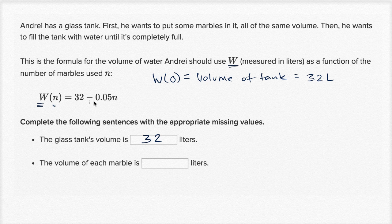Well, what's going on here in this function definition? So the highest that this could be is 32 because that's the most water you would put in. If you had no marbles, you would just fill up the tank and put in 32 liters. Then every marble that you put in, you're going to have to put in 0.05 less liters.